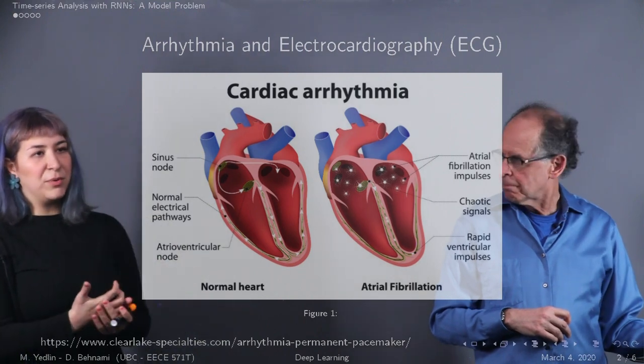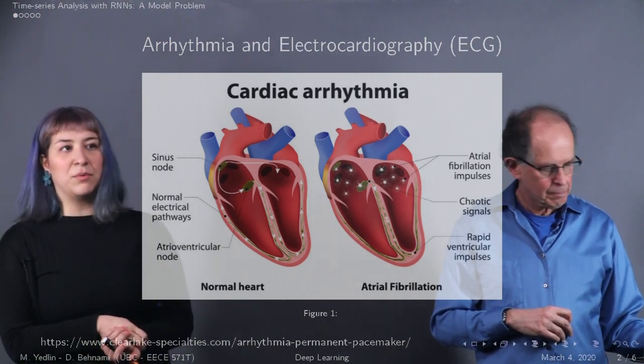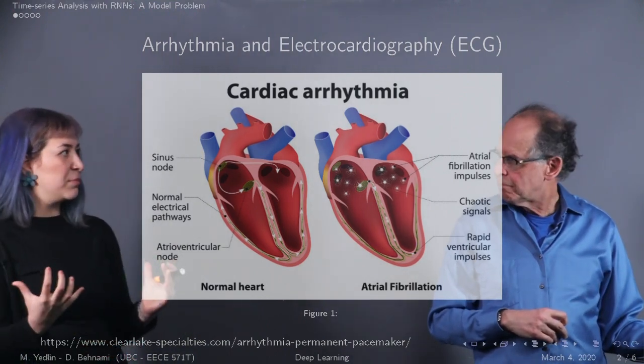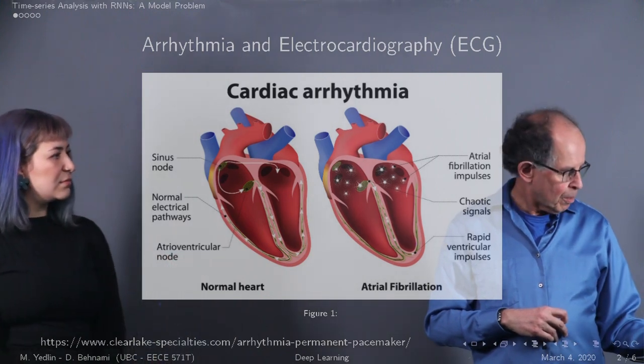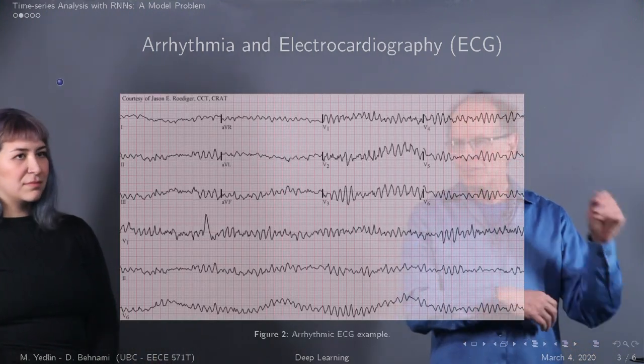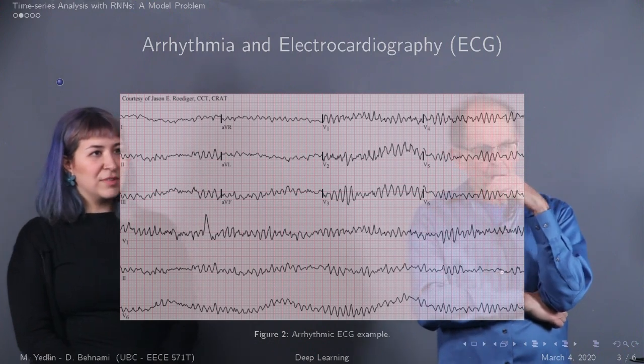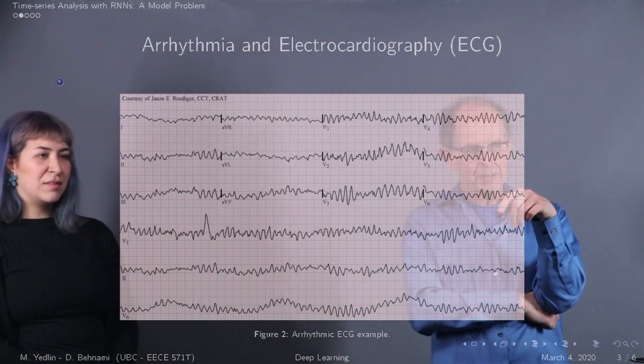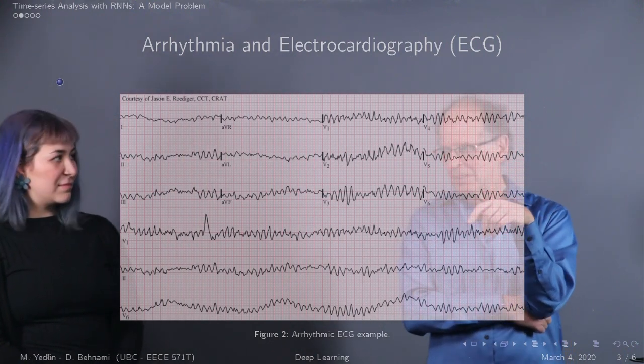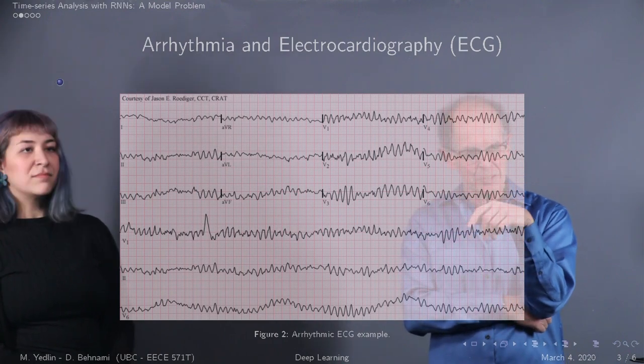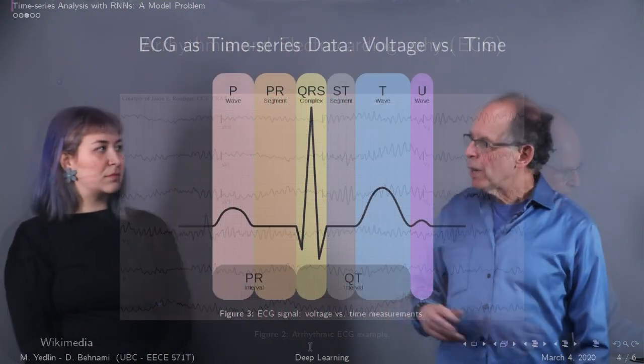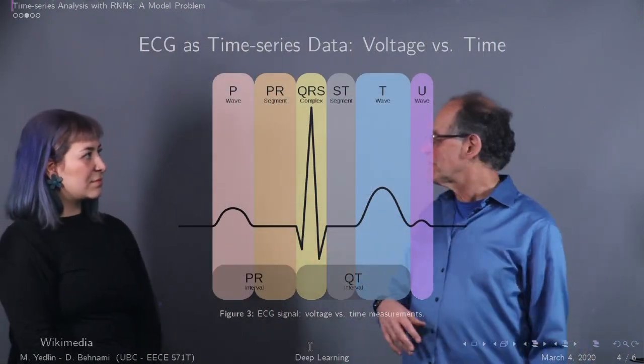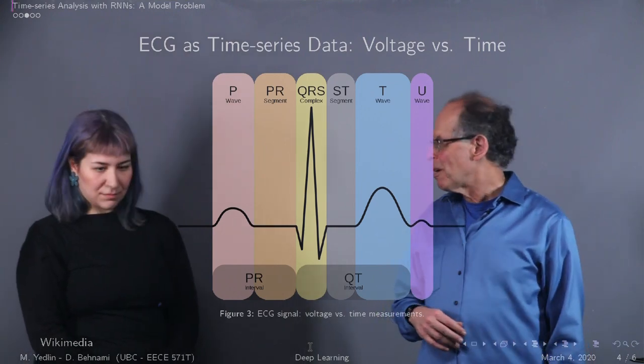Let's look at how we can predict arrhythmia with RNNs as a model problem. All right, so here's an example and you can see that we have normal clear heartbeats in this picture. Well, take us through this description of the signal from a heartbeat.